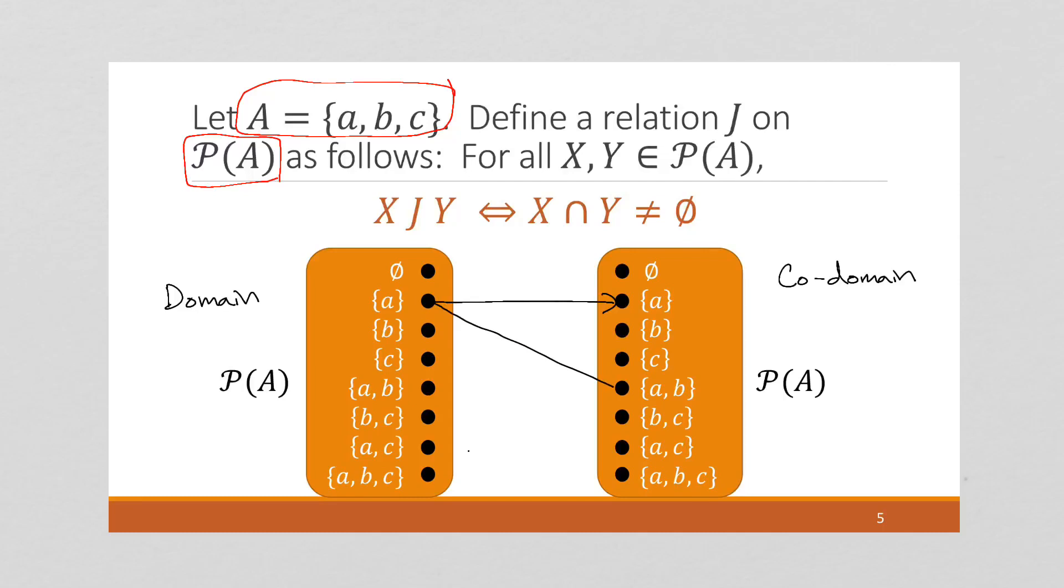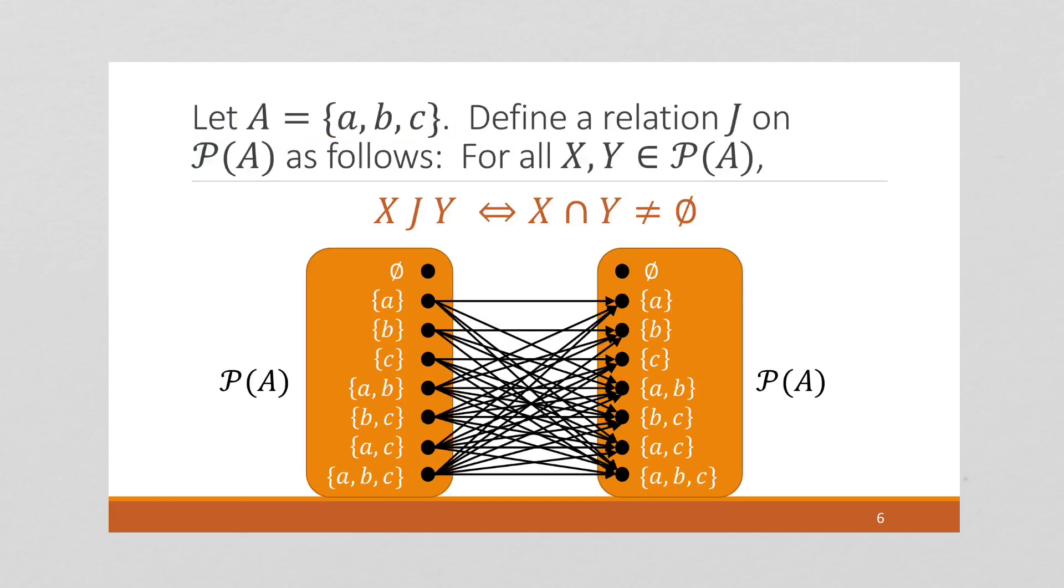Okay, and then we get to {b}, we're going to see that this is going to become pretty messy if we were going to do the whole thing. It actually becomes a little ridiculous, and I'm going to stop here, and if we move to the next slide, you can see here's an illustration where all the arrows are added. So this is the arrow diagram for the relation J.